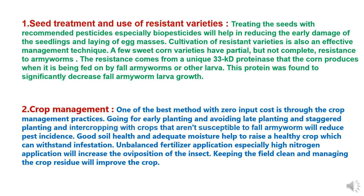The first method of control is seed treatment and use of resistant varieties. Treating seeds with recommended pesticides, especially bio-pesticides, will help reduce early damage to seedlings and egg mass laying. Cultivation of resistant varieties is also an effective management technique. A few sweet corn varieties have partial but not complete resistance to armyworms. The resistance comes from a unique 33 kD protein that corn produces when being fed on by Fall Army Worms or other larvae, and this protein significantly decreases Fall Army Worm larval growth.